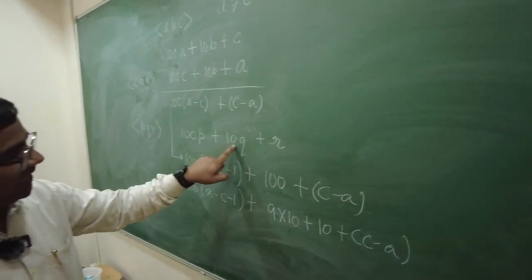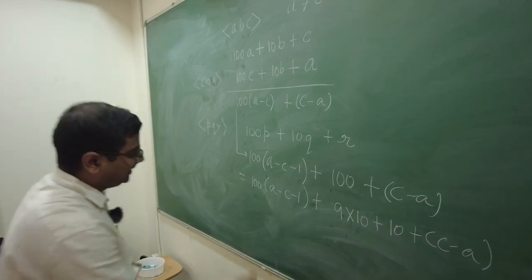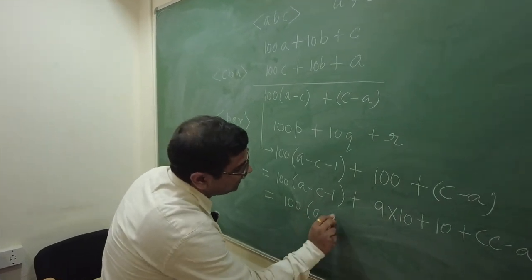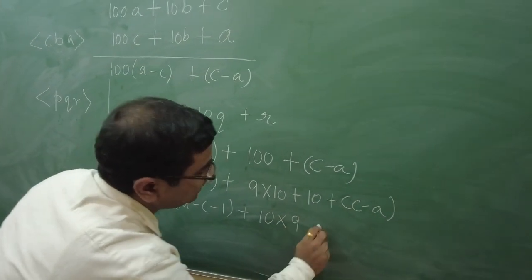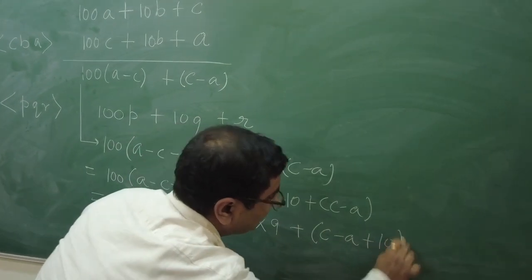Now, I am getting 1. See here. So, this number becomes 100 A minus C minus 1 plus 10 times 9 plus C minus A plus 10. Right?